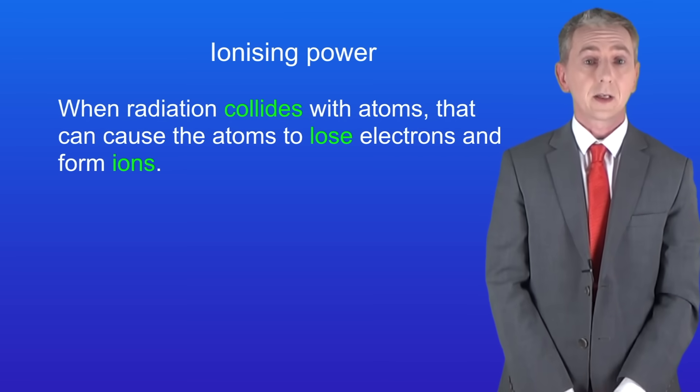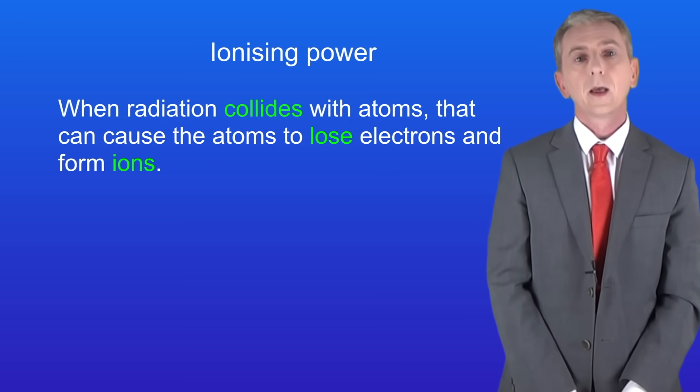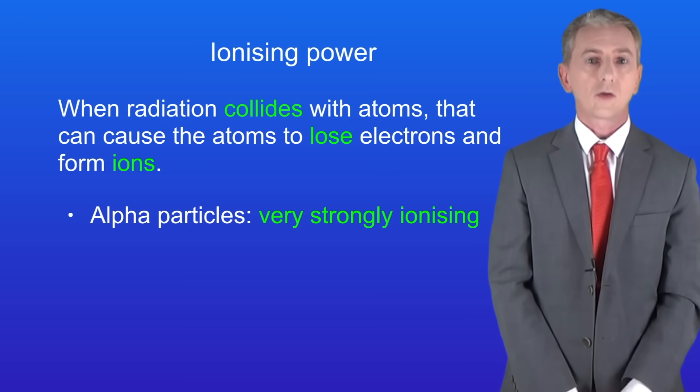Now each type of radiation has a different ionizing power. Alpha particles are very strongly ionizing. That means they can produce a lot of ions when they collide with the material.